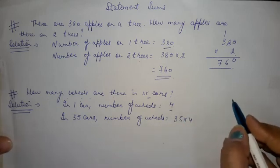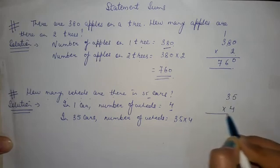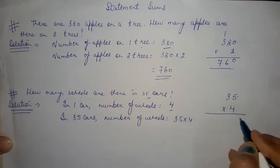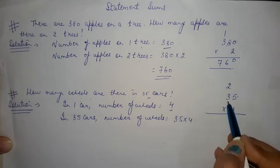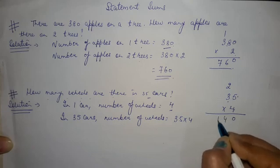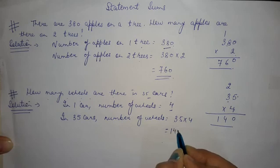So multiply 35 with 4. 4 times 5 is 20. Write 0 here, carry 2. 4 times 3 is 12 plus 2 is 14. So the number of wheels in 35 cars are 140.